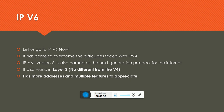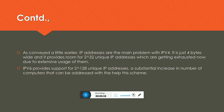IPv6 came in as a savior, with more addresses and many more features. IPv4 has two to the power of 32 unique IP addresses, whereas IPv6 has two to the power of 128 unique IP addresses. 128 bits is something seriously huge — two to the power of 128 is really awesome and definitely appreciated.